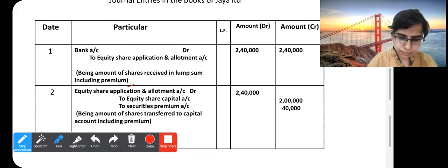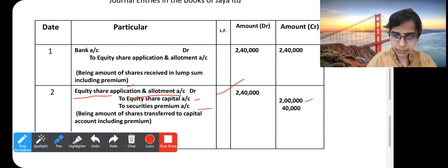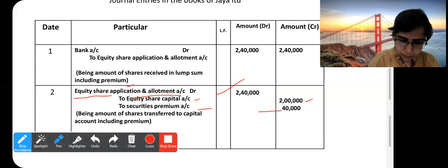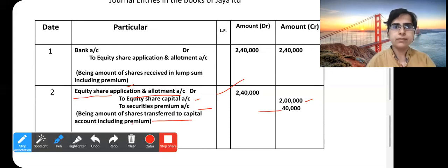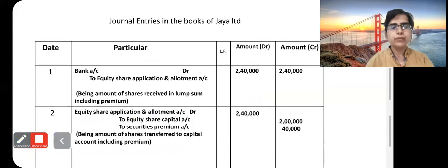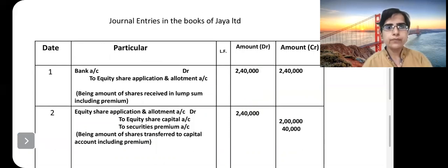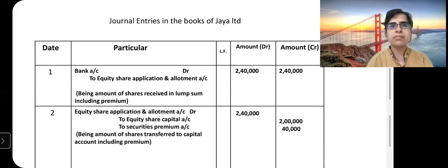The second entry: Equity Share Application and Allotment Account debit 2,40,000, total amount received by the company, to Equity Share Capital 2,00,000 and to Securities Premium 40,000. Narration: Being amount of share transferred to capital account including premium. The company received 40,000 as premium.